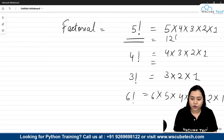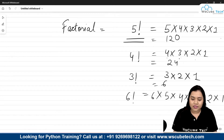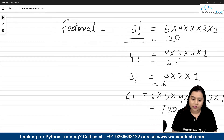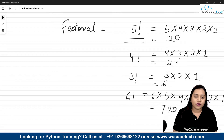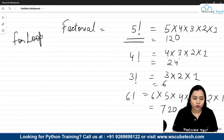So factorial of 5 would be 120. Factorial of 4 would be 4 × 3 × 2 × 1, which is 24. Factorial of 3 is 6, and factorial of 6 would be 720. This is how we find a factorial using normal mathematics. Now if we want to write a program in Python, we will use a for loop as our first solution.